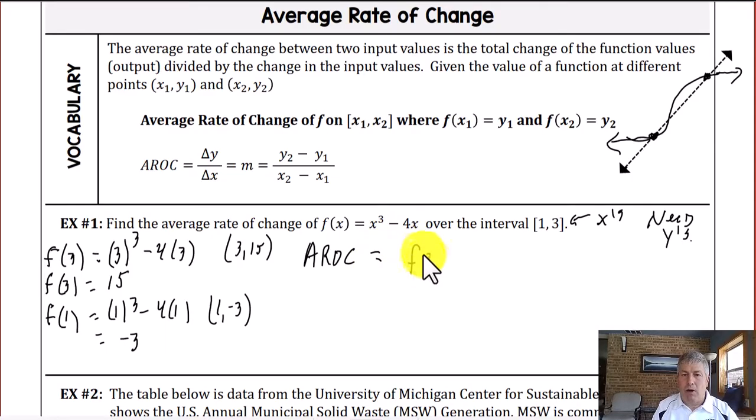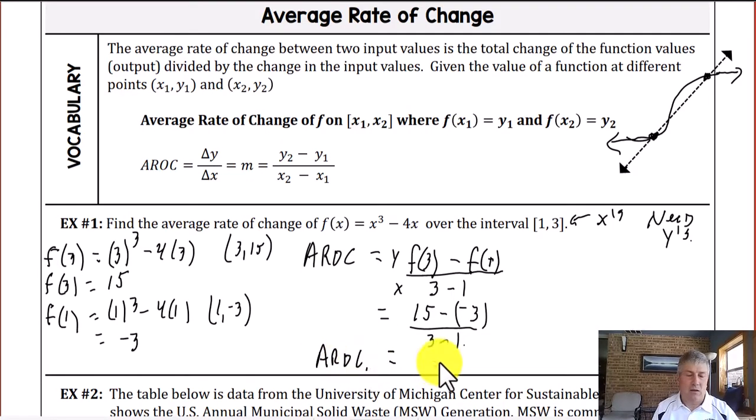So we found f of 3. We're going to subtract f of 1. And that's all over our x values of 3 minus 1. So 15 minus negative 3 all over 3 minus 1. So our average rate of change is equal to 18 over 2 or 9.